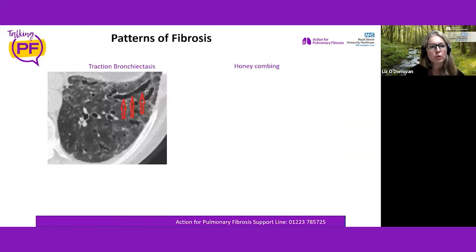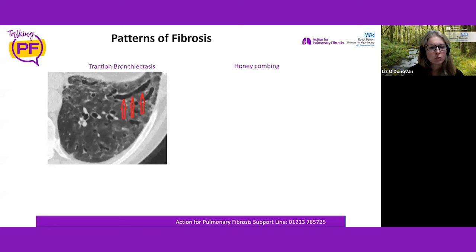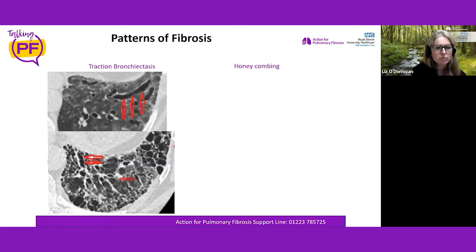Another sign is traction bronchiectasis — traction dilatation of the airways — where airways are abnormally and irreversibly dragged apart, becoming irregular and widened. This is often worse towards the edges of the lung where there's less connective tissue to hold things in place. Red arrows on the image point to these irregular dilated airways being dragged apart by fibrosis.